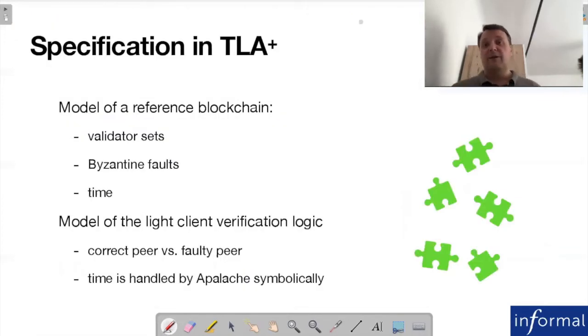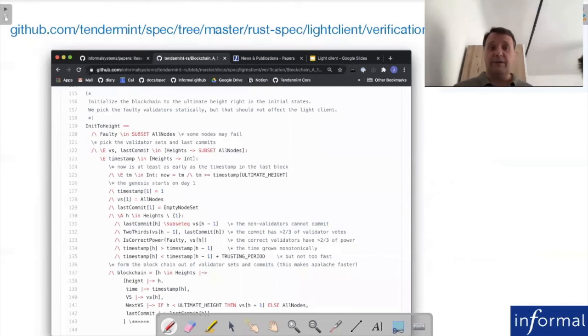Once this document is ready, we sit down and write the specification in TLA plus. In the case of light client, it actually took us several hours to translate the English specification into actual TLA plus that we could check with Apalache. What we focus on in the TLA plus specification: we focus on the model of the blockchain that I briefly explained to you before. This model captures the notions of validator sets, Byzantine faults, and the time assumptions we have in Tendermint consensus. We have a specification of the light client protocol in TLA plus.